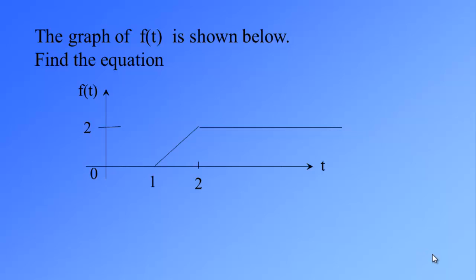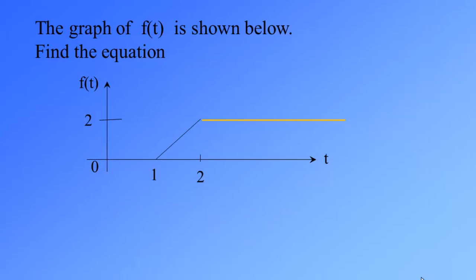The first piece, for t between 0 and 1, the function is equal to 0. So f(t) = 0 for t between 0 and 1. The next piece is for t greater than 2, f(t) = 2.